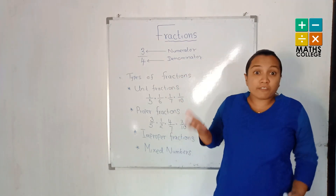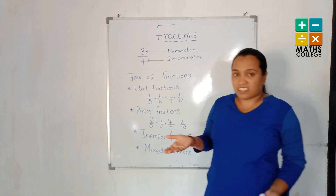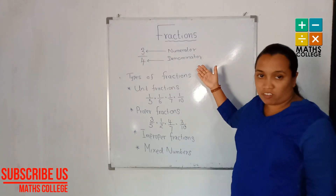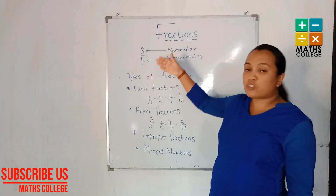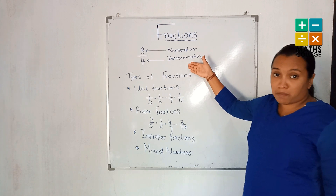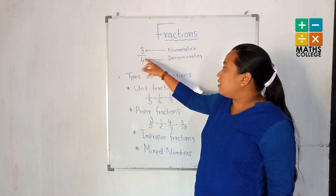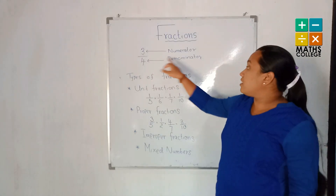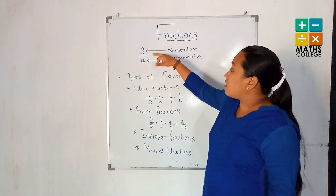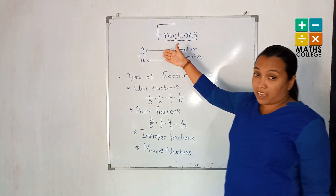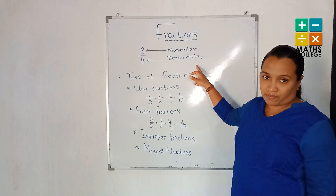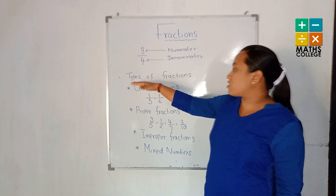Let's go. What are the fractions? I think you learned about fractions in grade 6 also. Fractions have two numbers, and they have special names. The number below the line is the denominator, and the number above the line is the numerator. Numerator and denominator.